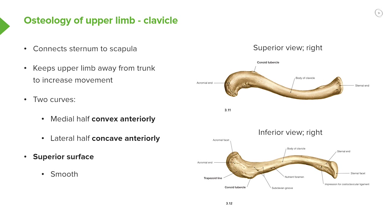Here we've got the superior view of a right clavicle, as if we're looking down onto it. We can see the sternal end and the acromial end. The medial half has a curve and the lateral half has a curve as well, which is important in recognizing a left from a right clavicle, and also identifying the superior and inferior surfaces. Superiorly, the clavicle is smooth — there are no undulations or grooves, which we'll later see on the inferior view.